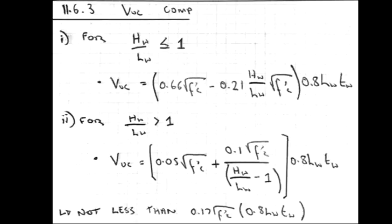For the height of the wall divided by the length of the wall if it's greater than 1, we have a slightly different equation here, but it is not to be less than 0.17 times the strength of the concrete square root times 0.8 length of wall times thickness of the wall.